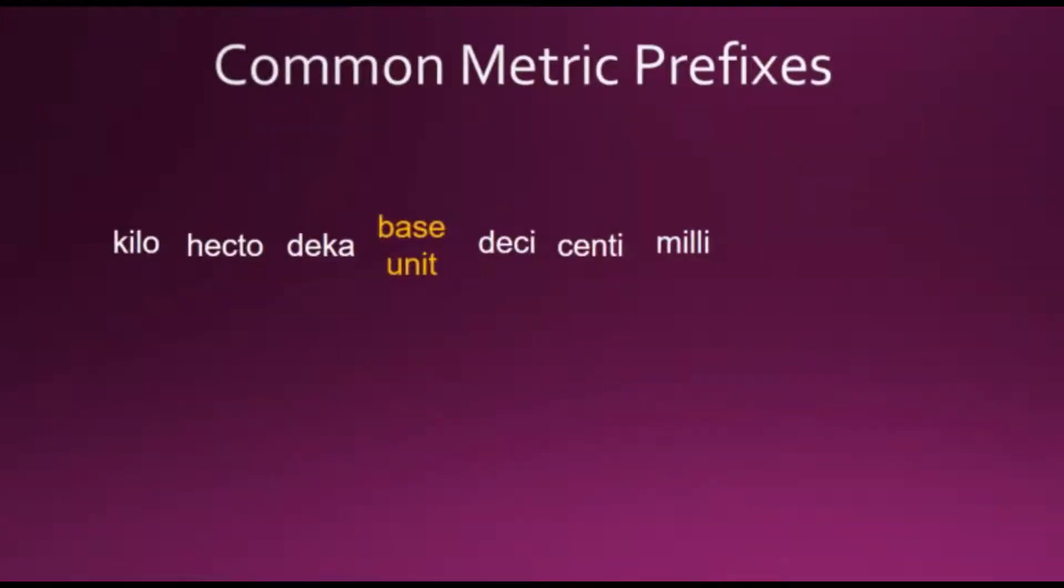Here are the abbreviations for these common metric prefixes. K for kilo, h for hecto, dk for deka, base doesn't have a prefix, deci is d, centi c, milli m.